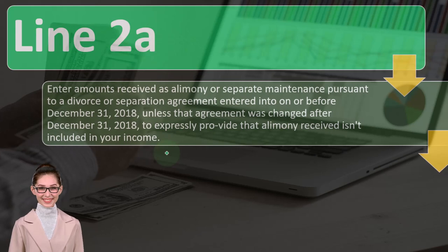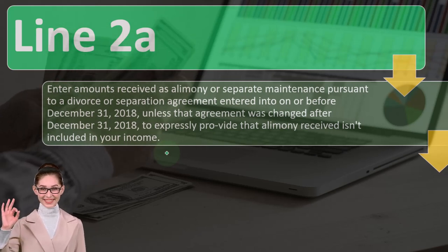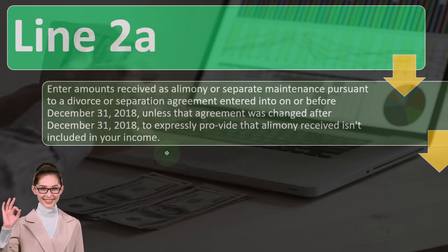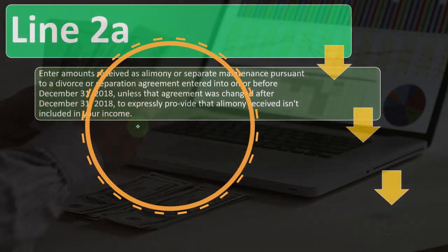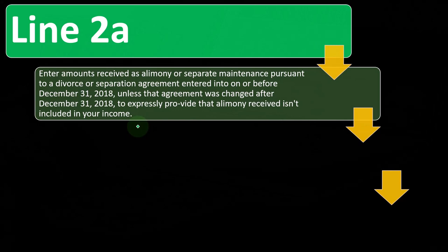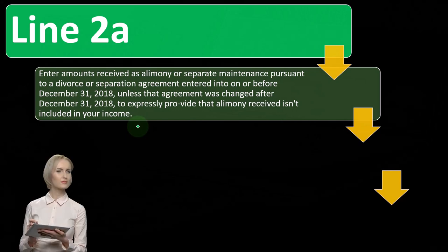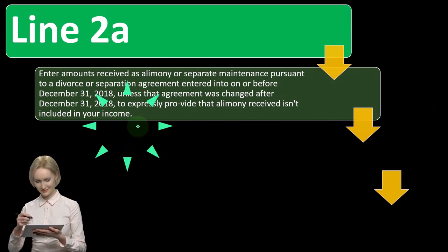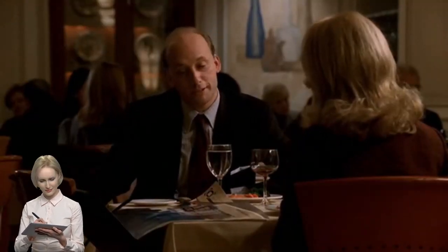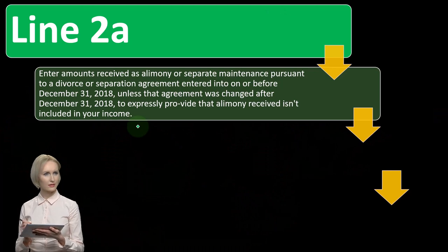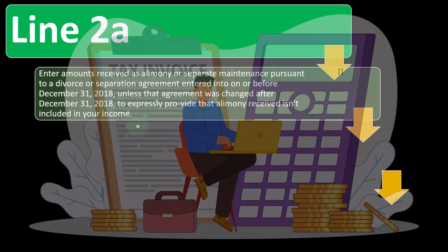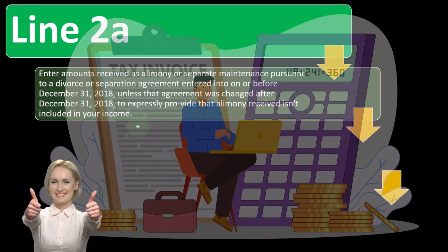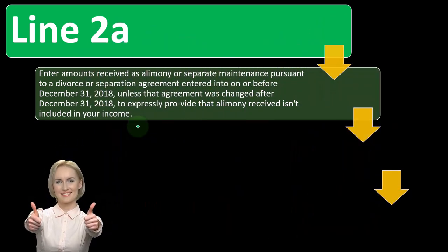When the payer claims the deduction, they would generally put the social security number of the person receiving the money — the ex-spouse — similar to how a 1099 works. The IRS uses this to pressure the one getting the tax benefit to provide the recipient's information, so they can go after the recipient for the taxes on that transaction, and the one who got the money would have to include it in income.